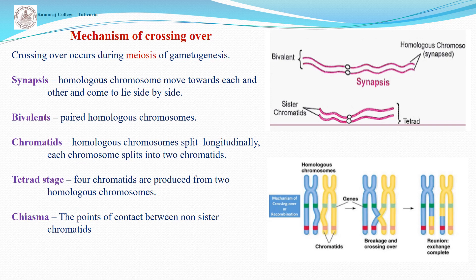Crossing over occurs during meiosis in gametogenesis. Some important steps are: synapsis, bivalent, chromatids, tetrad stage, and chiasma. Synapsis means homologous chromosomes move towards each other and come to lie side by side. Bivalent means a pair of homologous chromosomes called bivalents. Then, homologous chromosomes split longitudinally — each chromosome splits into two chromatids. Tetrad stage means four chromatids are formed from two homologous chromosomes. Chiasma means the point of contact between non-sister chromatids.